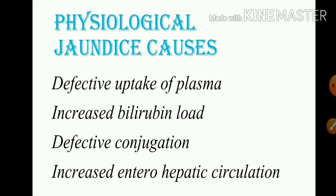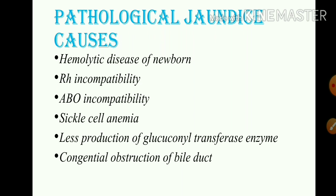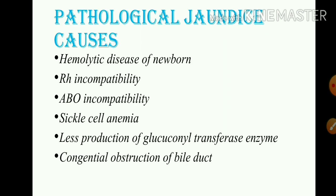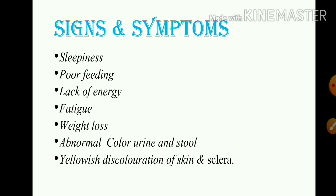Causes of physiological jaundice include: defective uptake from plasma, increased bilirubin load, defective conjugation in the liver, and increased enterohepatic circulation. Causes of pathological jaundice include: hemolytic disease of the newborn, Rh incompatibility, ABO incompatibility, sickle cell anemia, less production of glucuronyl transferase enzyme, and congenital obstruction of the bile duct.